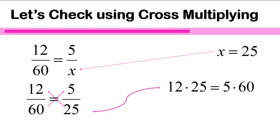60 times 5, 5 times 60 — doesn't matter. As long as you're multiplying the numbers that are across from each other, you'll notice that you get 300 equals 300 at the end. So we can check our work using cross-multiplying. Notice if it was 60 times 5 instead of 5 times 60, you would have gotten the same answer. We can verify they are equivalent fractions because the numbers across from each other multiply out to give us the same answer.